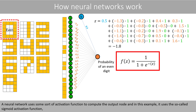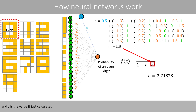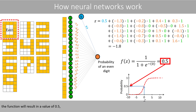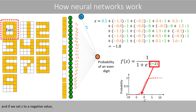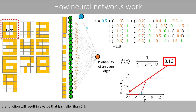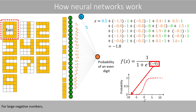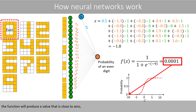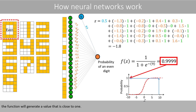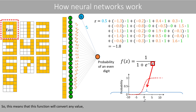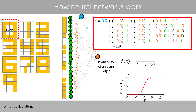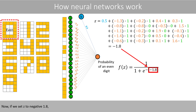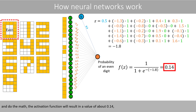A neural network uses some sort of activation function to compute the output node, and in this example it uses the so-called sigmoid activation function, where e is Euler's number and z is the value just calculated. For large negative numbers the function results in a value close to 0, and for large positive numbers the function results in a value close to 1. So this function converts the computed value into a value that goes between 0 and 1. If we set z to negative 1.8 and do the math, the activation function will result in a value of about 0.14.